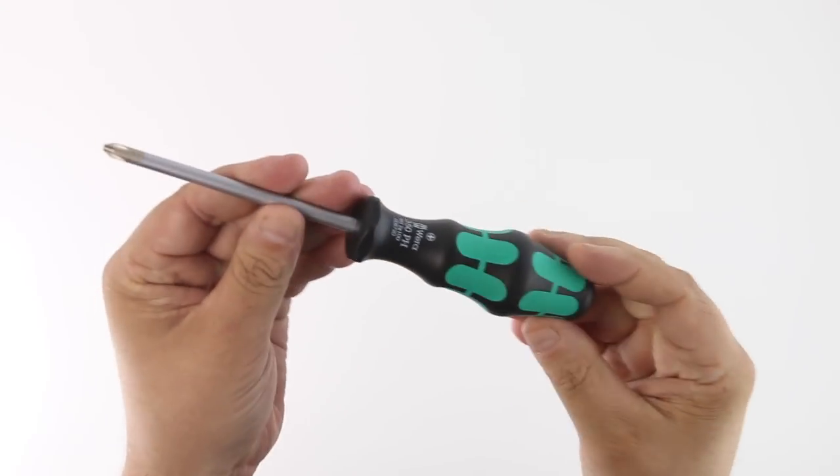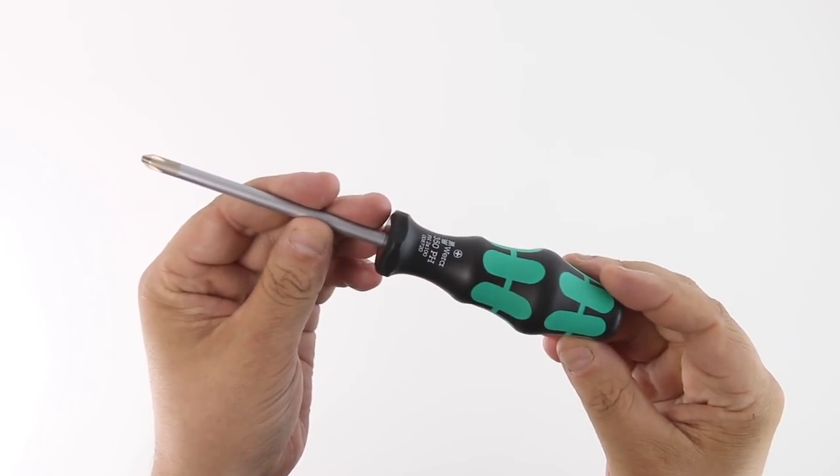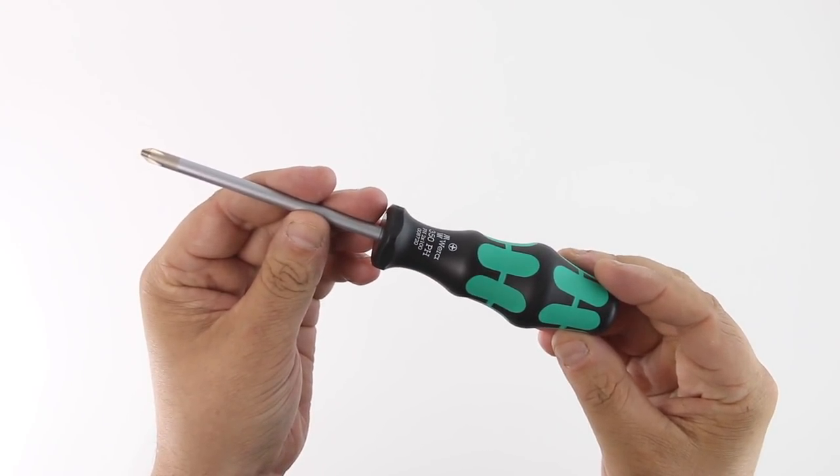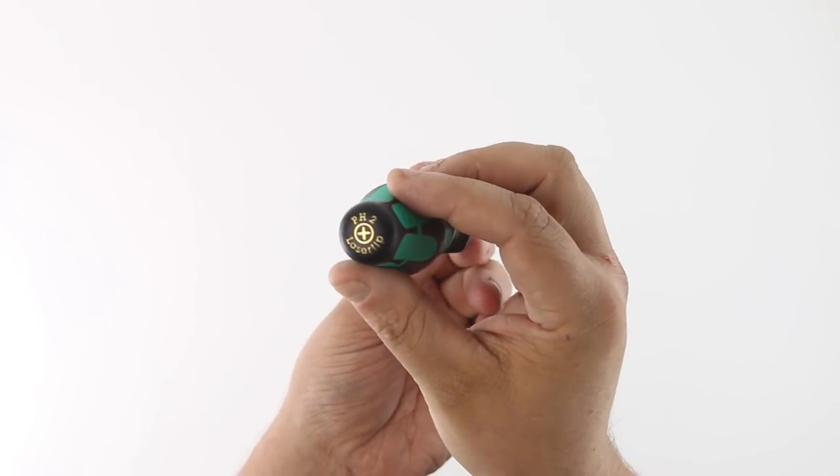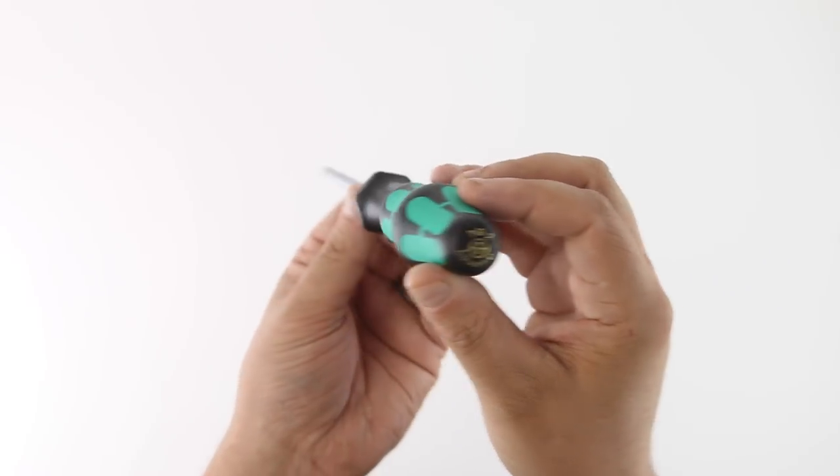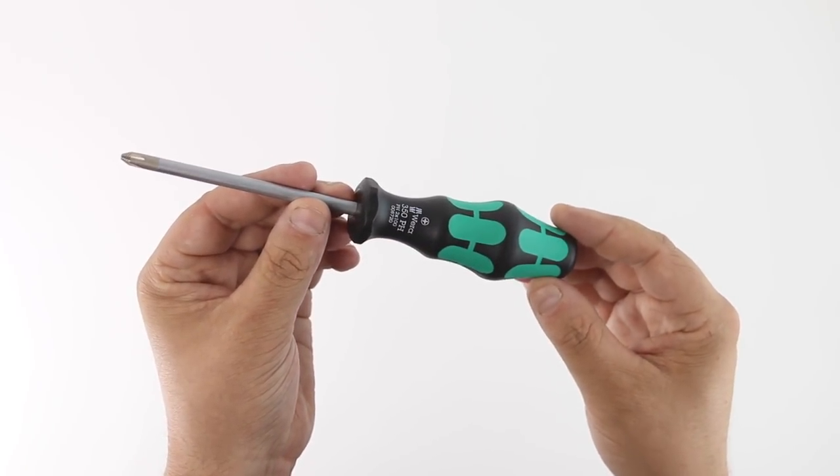The ubiquitous green and black craft form handle is the flagship of the Wera brand. Wera has long believed that the hand should dictate the handle and not vice versa. If you squeeze some putty or play-doh in your hand, you will essentially have the shape of a craft form handle.